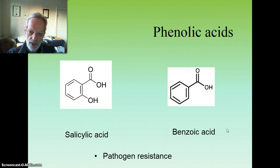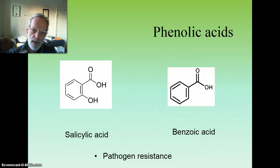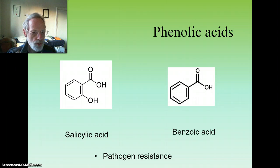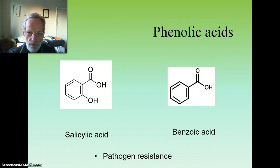Phenolic acids are the simplest phenolic compounds and are involved in a plant's resistance to pathogens, both by neutralizing the pathogens and also by signaling to other plants that attack is happening. In fact, we find that salicylic acid is almost universal in the higher plant world — so it's not just restricted to a few plants like willow, birch, or meadowsweet.